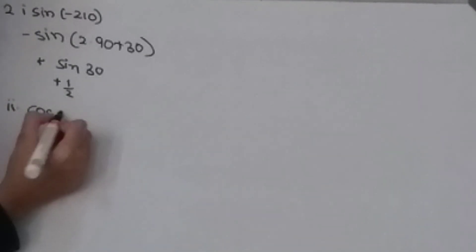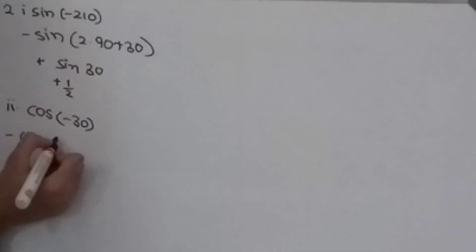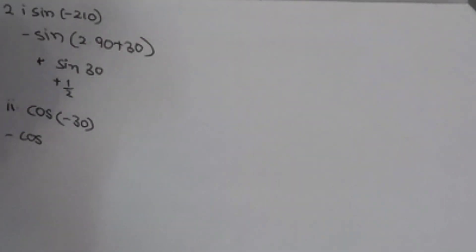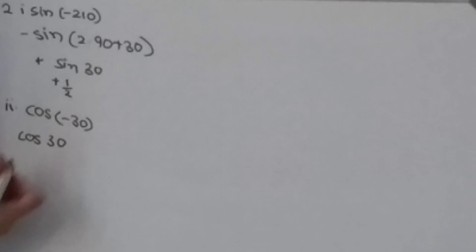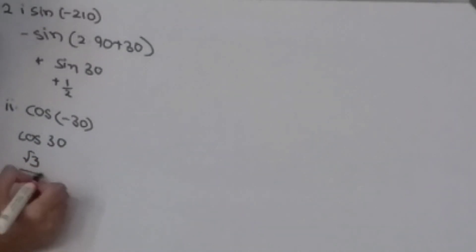cos(−30°) is nothing but minus cos — wait, no. cos(−30°) is nothing but plus cos(30°), which equals √3/2.